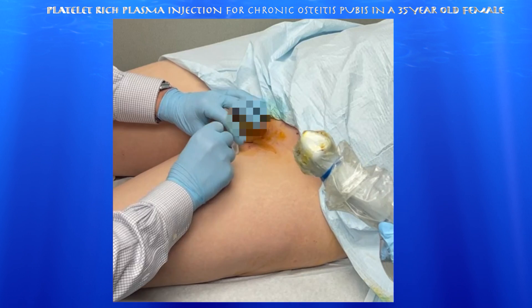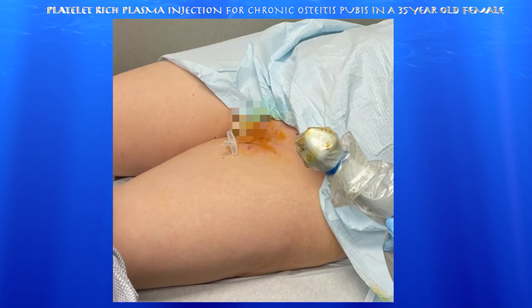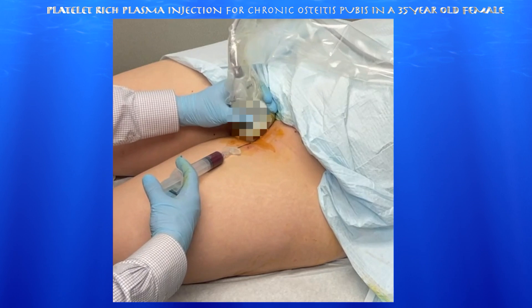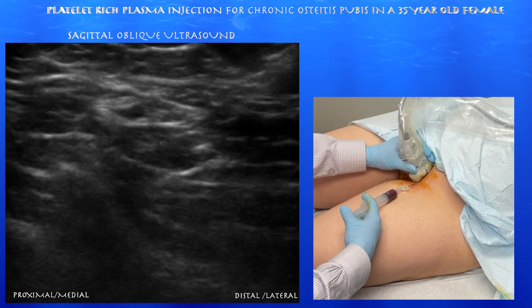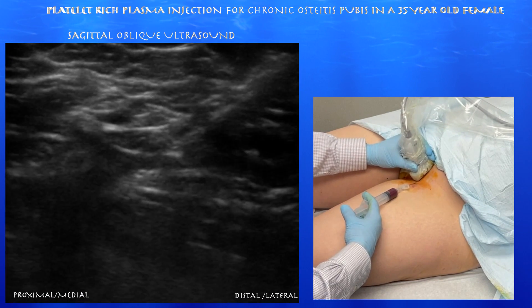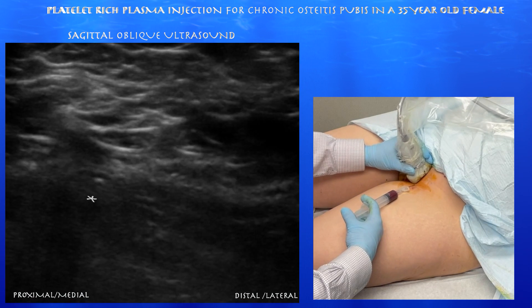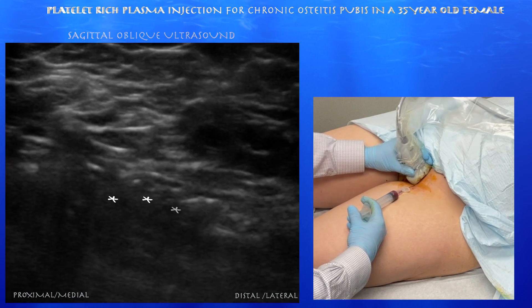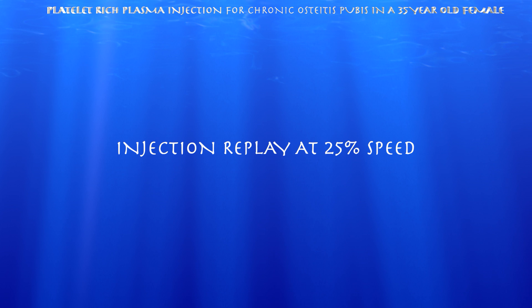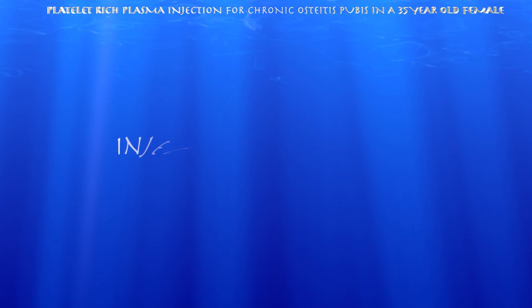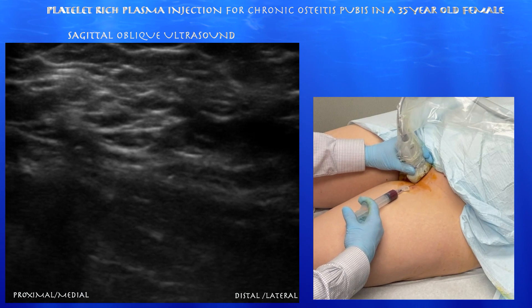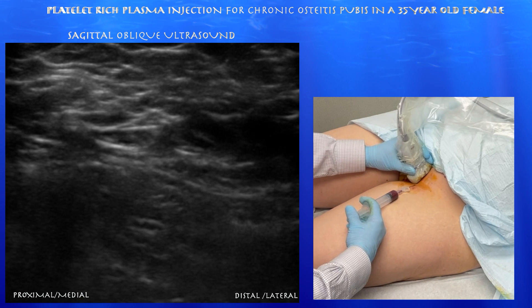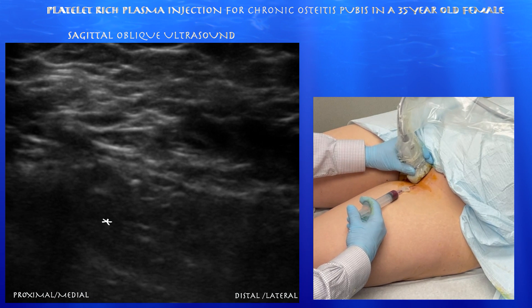We have the needle where we wanted, just near the origin of the adductor musculature, and now we're going to start with the PRP injection. You can see the needle tip essentially right at the adductor longus tendon, and here's the PRP spreading superficial to the adductor longus tendon. Here it is in slow motion — we can see that flash of the PRP going over essentially the adductor longus muscle and tendon.